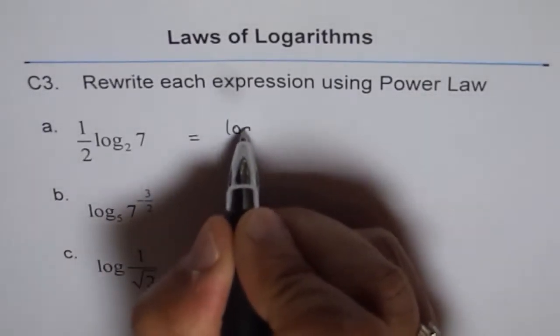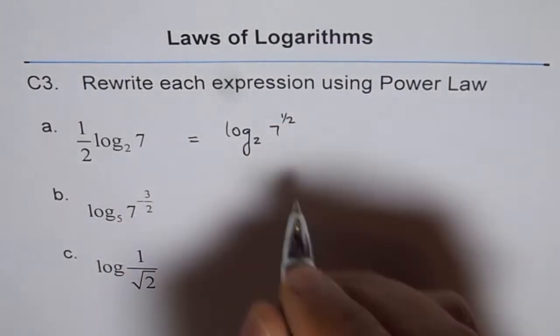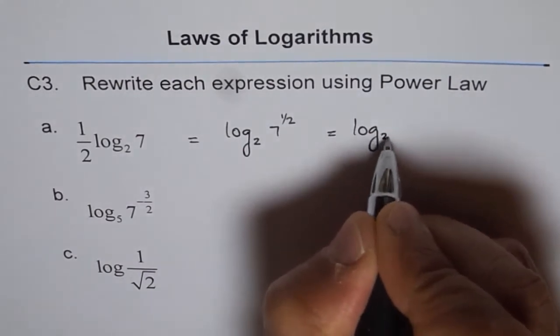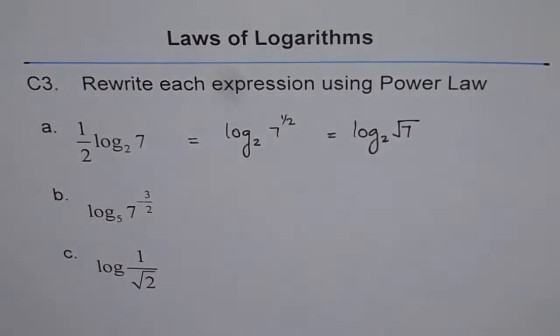So we can write this as log base 2 of 7 to the power of half. Sometimes you may see it written as this also, log base 2 of square root of 7. So that is 7 to the power of half.